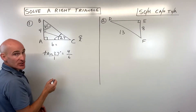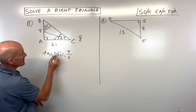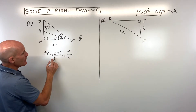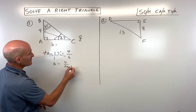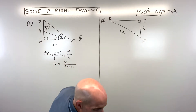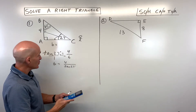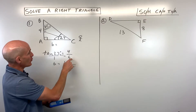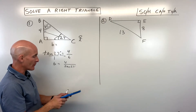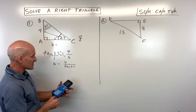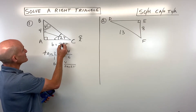Using the property of proportions, we can switch values on the diagonal, giving us D equals 4 divided by the tangent of 27 degrees. Alternatively, you can cross-multiply: 1 times 4 is 4, then divide both sides by tangent of 27 to isolate D. Using the calculator, this comes out to approximately 7.85. That's the missing side.